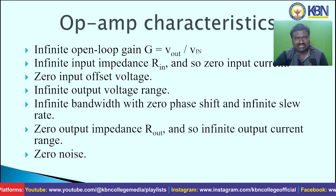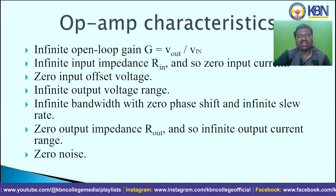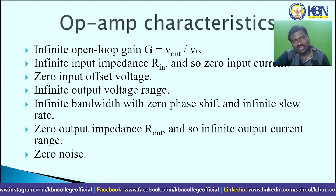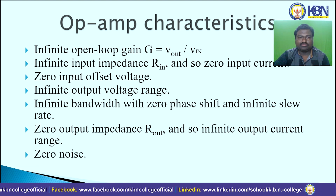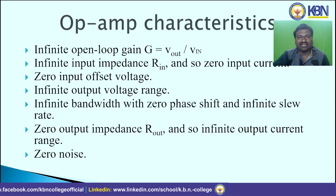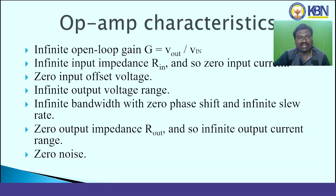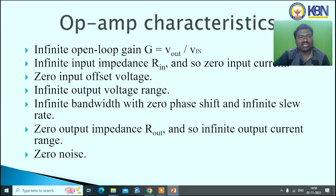The characteristics of an ideal operational amplifier are: infinite input voltage gain (infinite open-loop gain), where gain is the ratio of output voltage to input voltage; infinite input impedance R-in; zero input offset voltage; infinite bandwidth with zero phase shift; infinite slew rate; zero output impedance; infinite output current range; and zero noise.